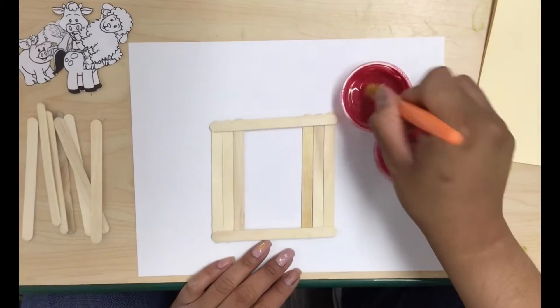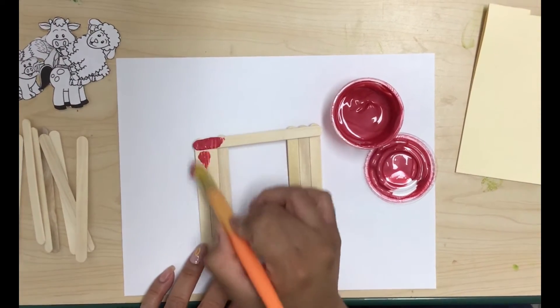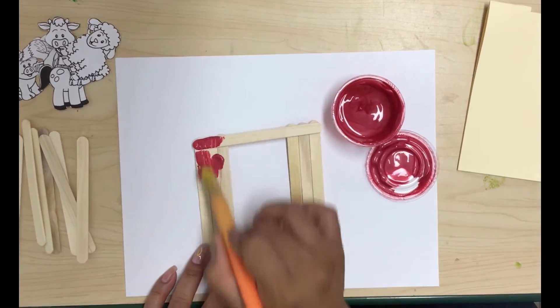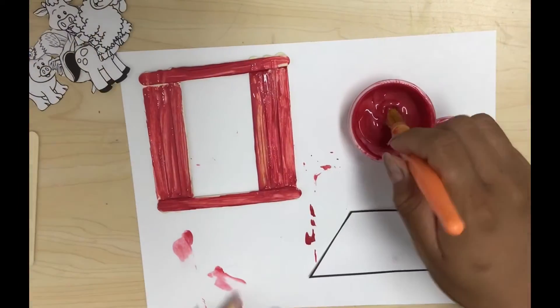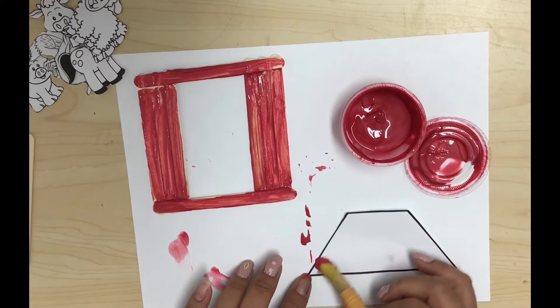We're going to take our paintbrush and our paint and paint our barn. Once we paint that we'll let it dry for a minute and we're going to take our trapezoid and paint that as well.